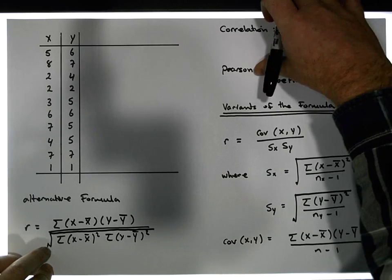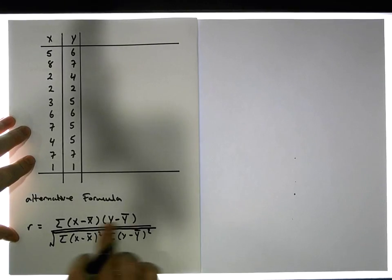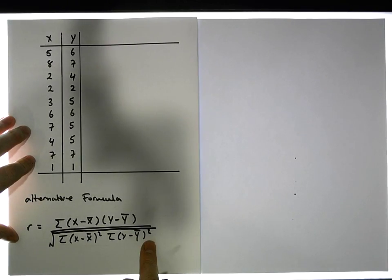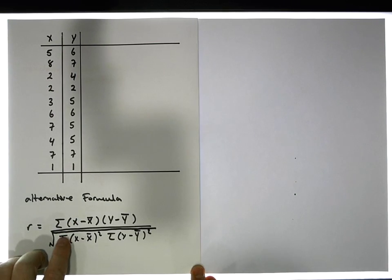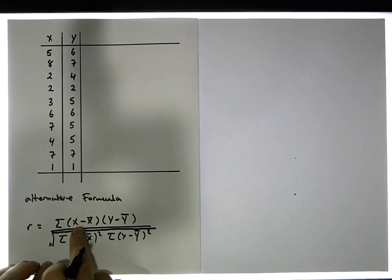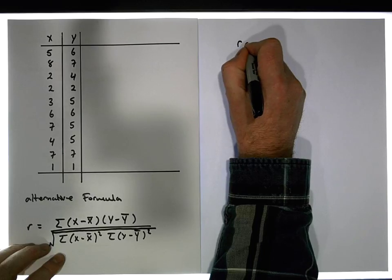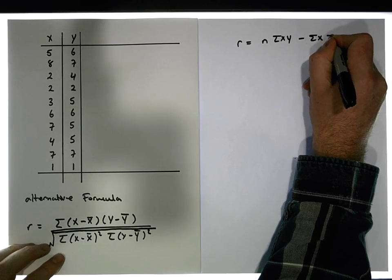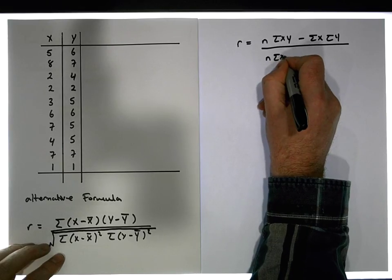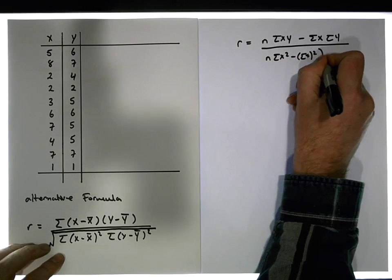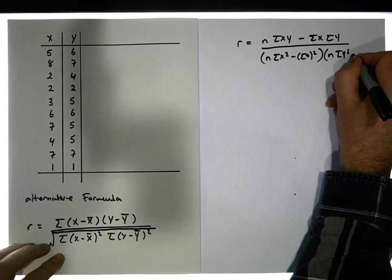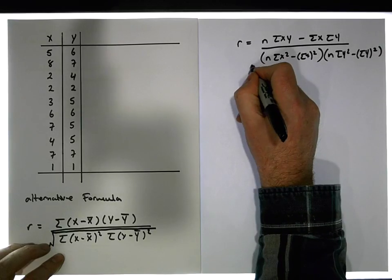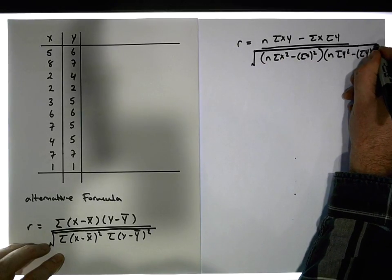The next formula is the one I like to use because it's a lot quicker to do the calculations in a table. If we multiply out the brackets and do some transformations, bringing similar terms together — remembering this is a summation of a product iterated across all observations — we get: r equals n times the sum of xy, minus the sum of x times the sum of y, all divided by the square root of n times the sum of x-squared minus the sum of x all squared, times n times the sum of y-squared minus the sum of y all squared. It looks a lot more complicated, but it's actually easier to use.